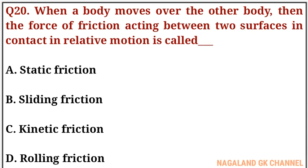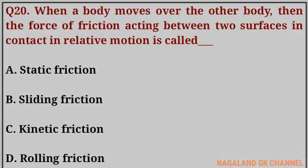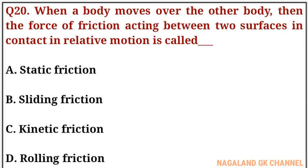Question number twenty, the last question: when a body moves over another body, the force of friction acting between two surfaces in contact in relative motion is called what? The correct answer is option number C, that is kinetic friction.